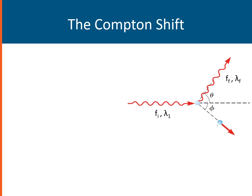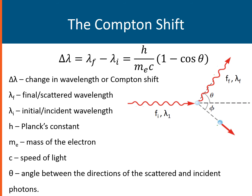The difference in the wavelength of the incident photon is known as the Compton shift. It can be expressed as: delta lambda equals the final (scattered) wavelength minus the initial (incident) wavelength, which also equals Planck's constant divided by the mass of the electron times the speed of light, multiplied by the quantity (1 minus cosine theta), where theta is the angle between the directions of the scattered and incident photon.